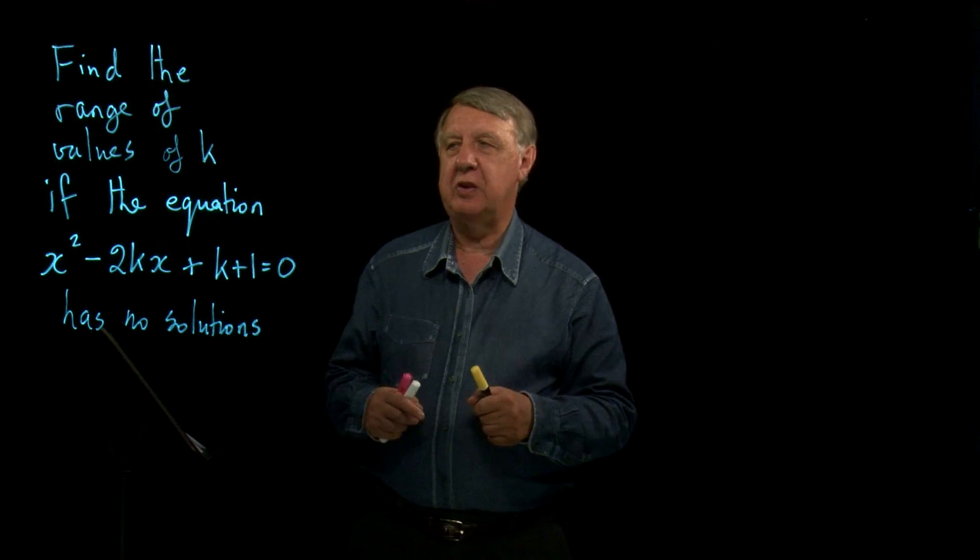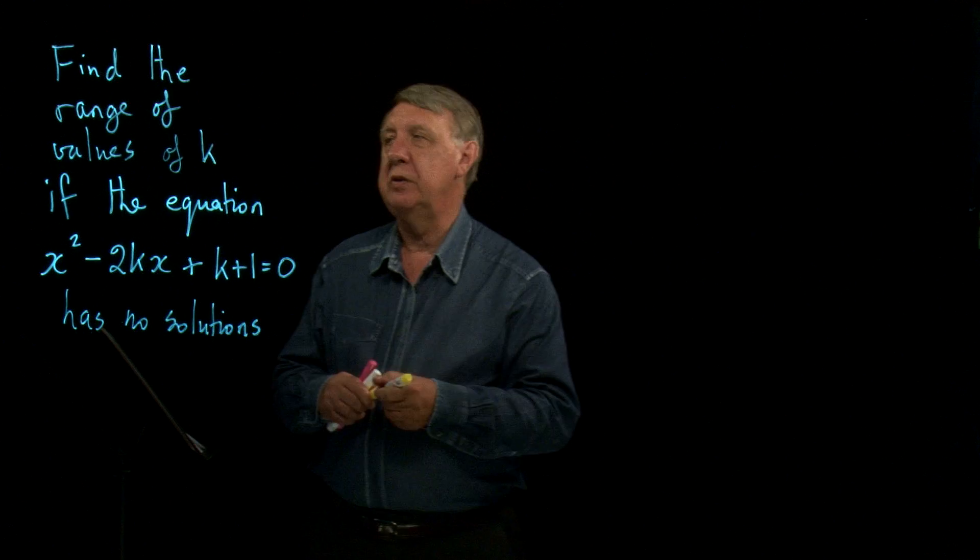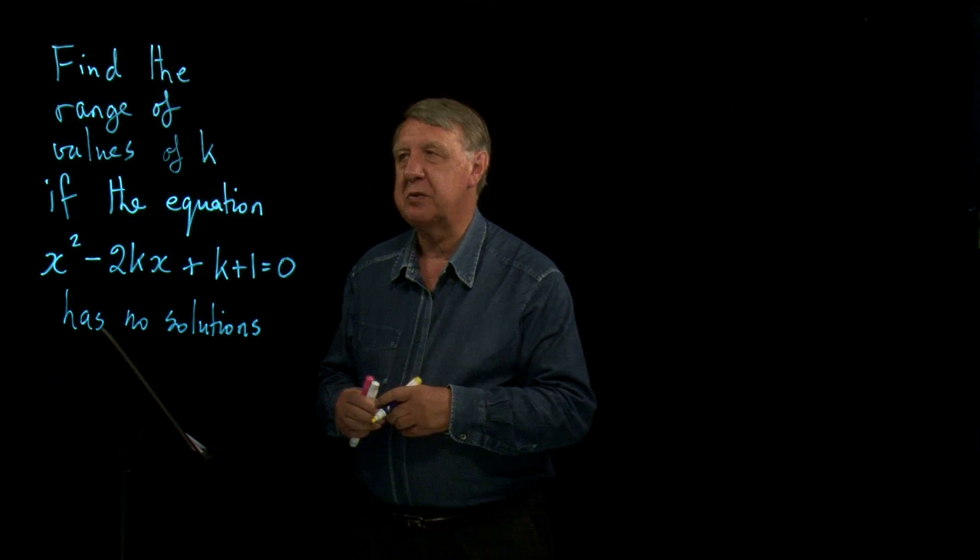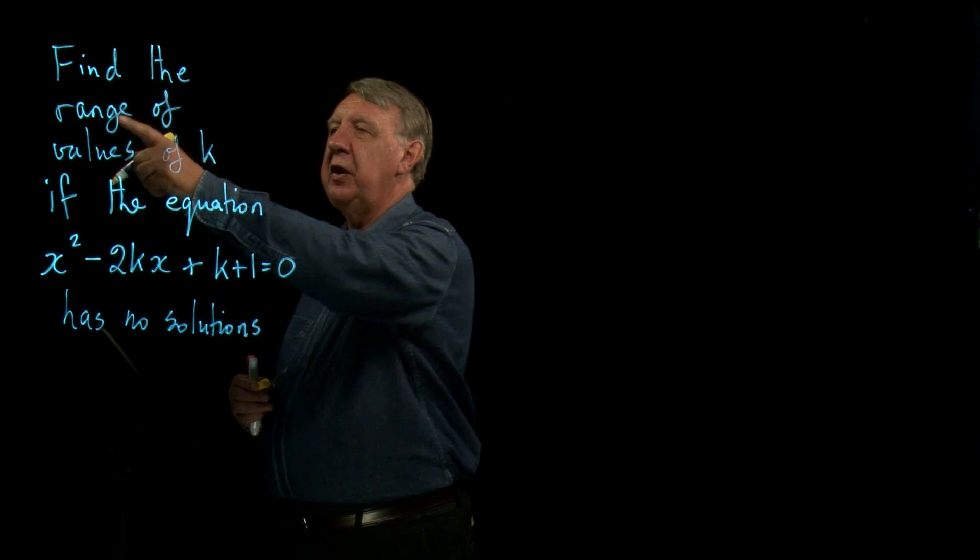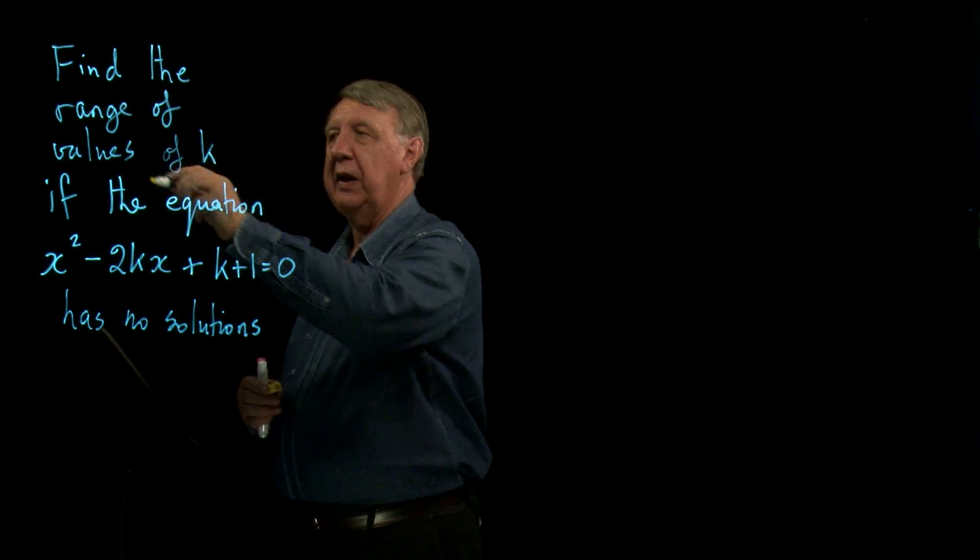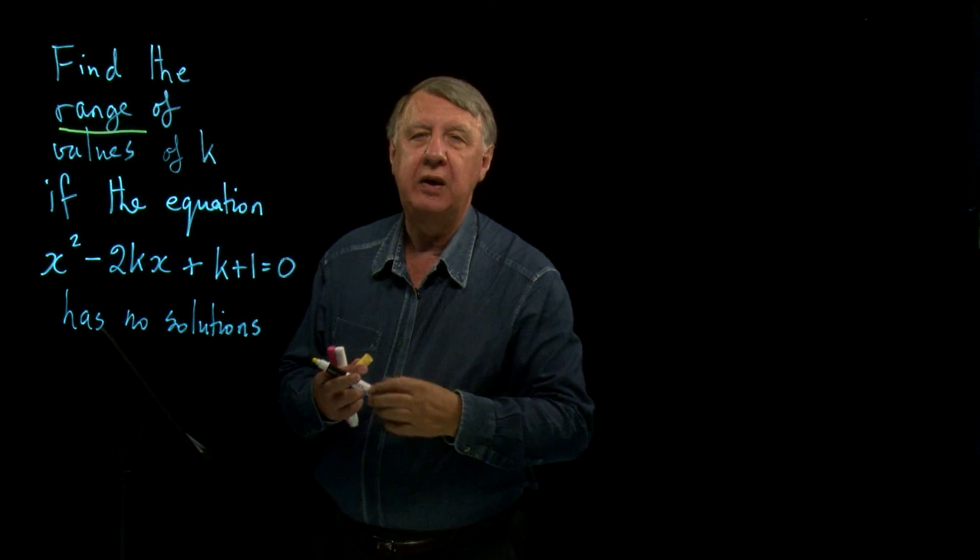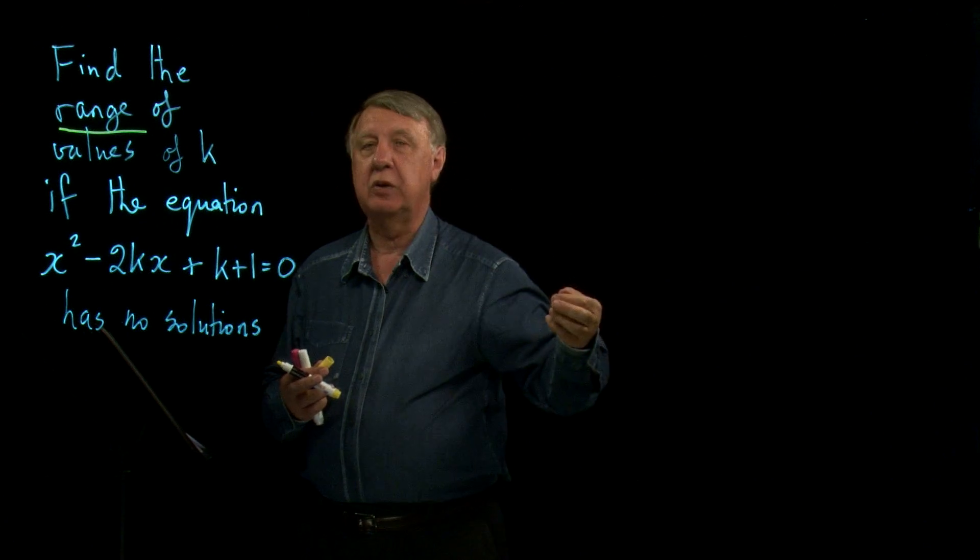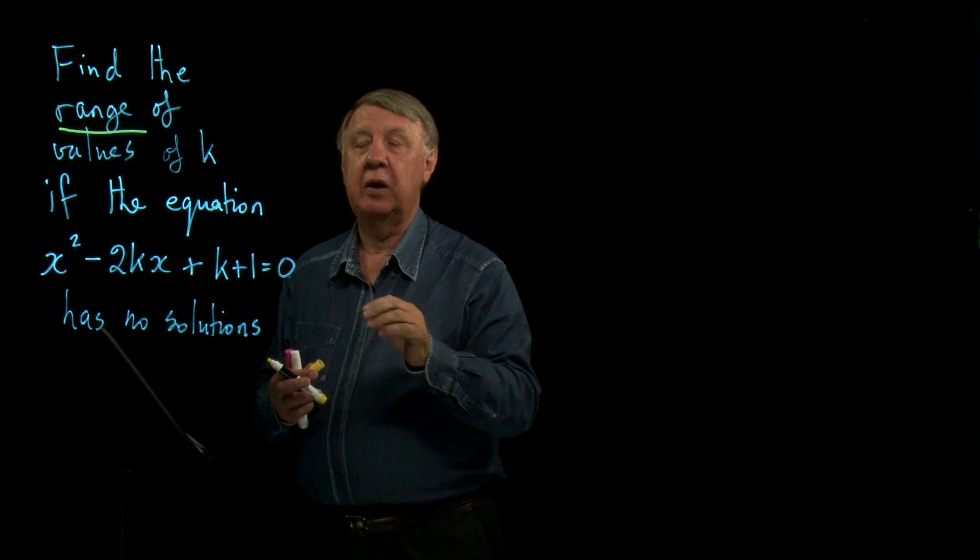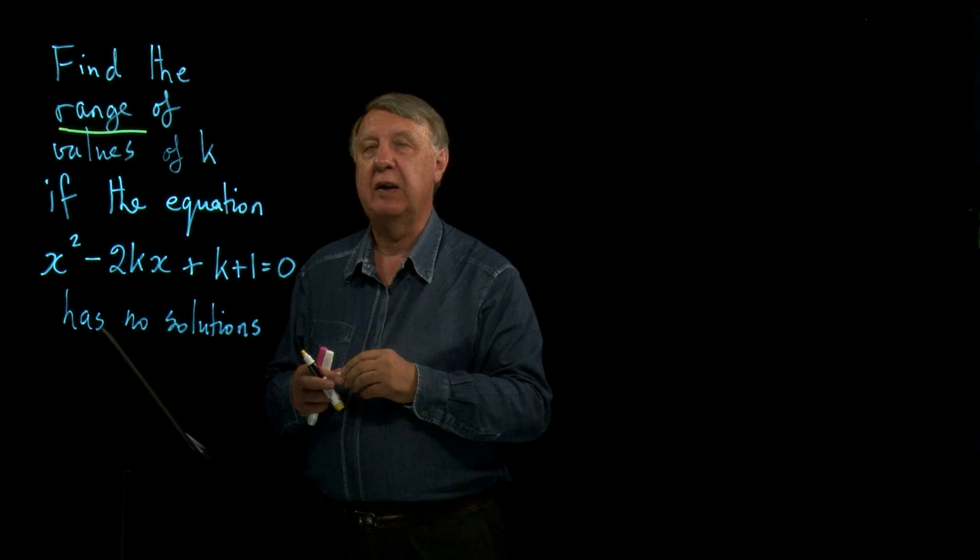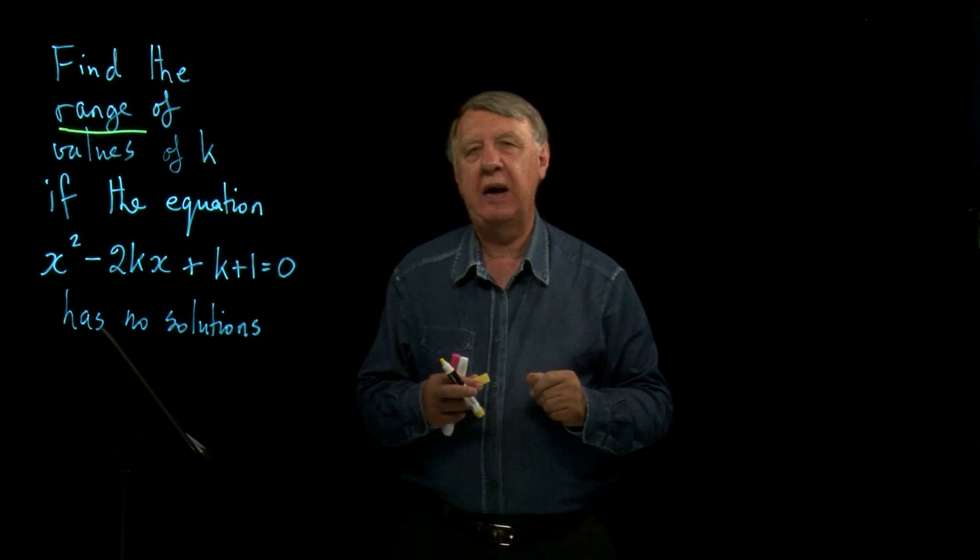Now when you're faced with a question in the exam, you have to look for clues as to what you're being required to do, and there are one or two clues that we can spot in the question to start with. First of all, it talks about finding the range of values of k. Now that suggests we're not going to end up with k equals one or k equals two, we're going to end up with perhaps an inequality, perhaps a region of values of k. So in our mind let's just remember we might have to use inequalities.